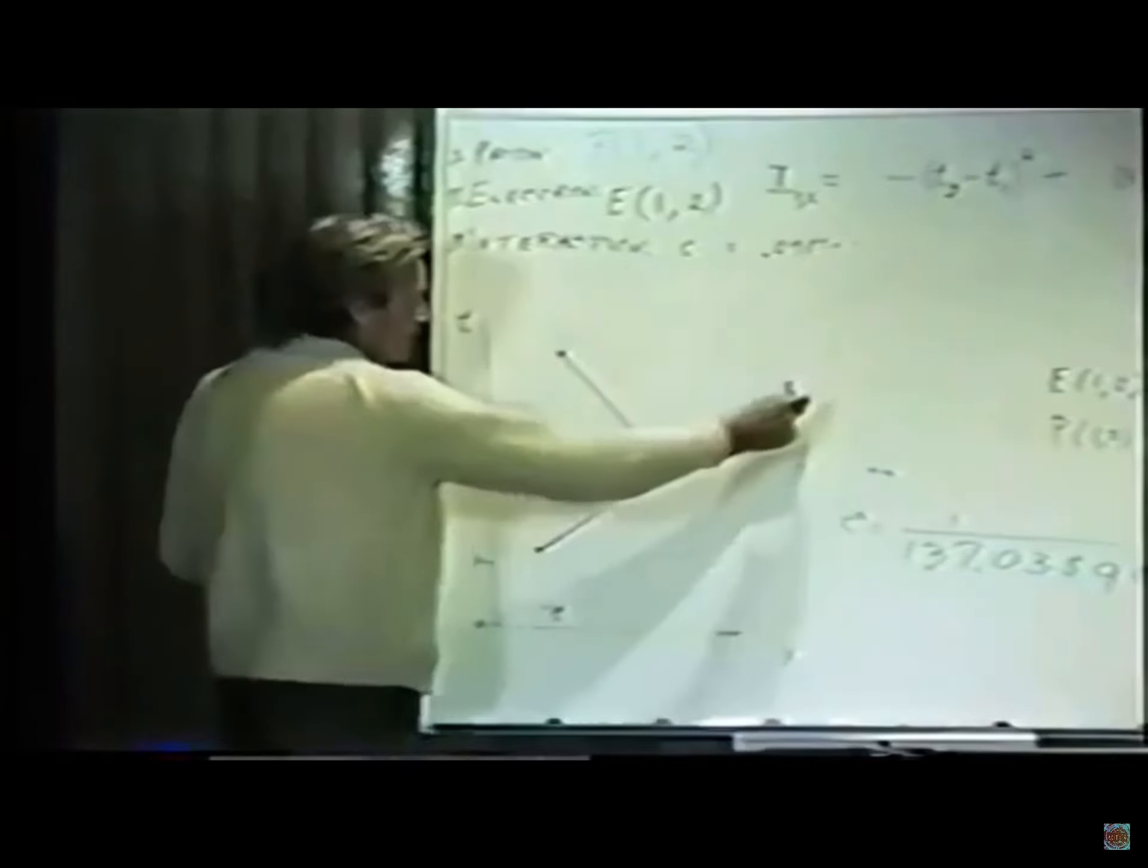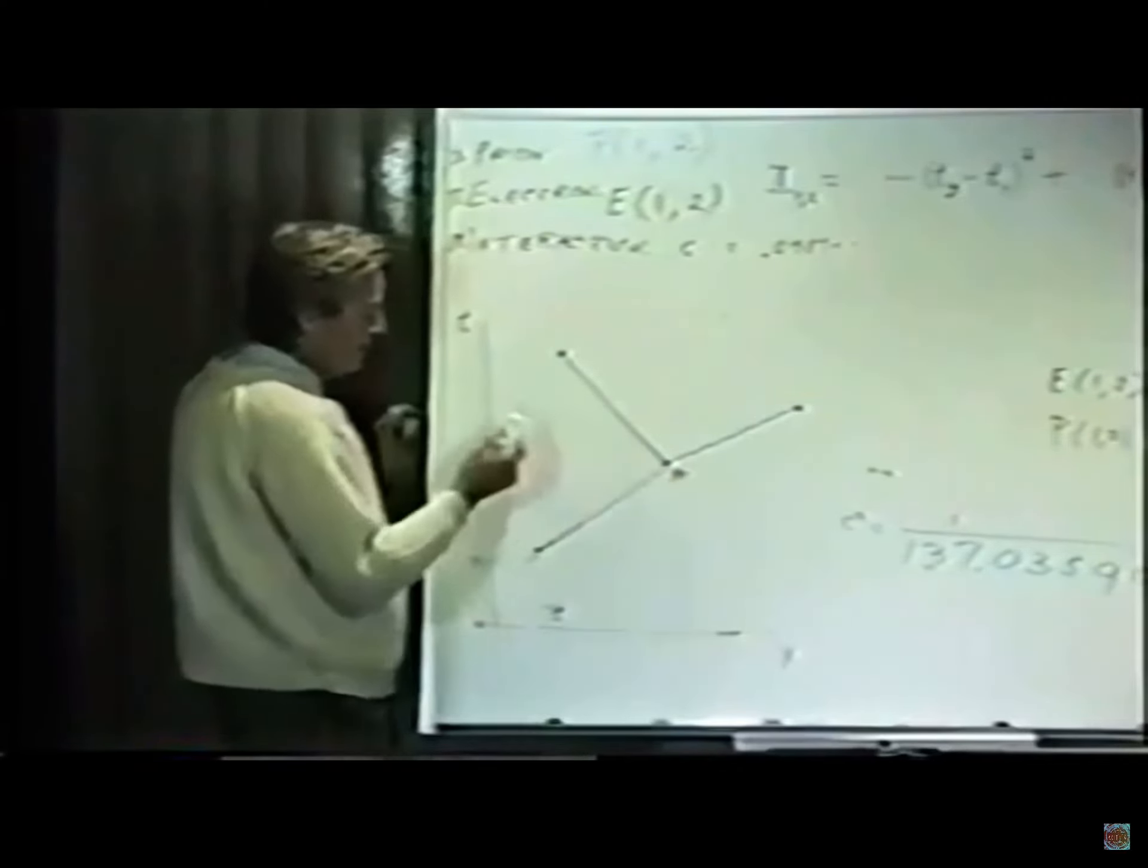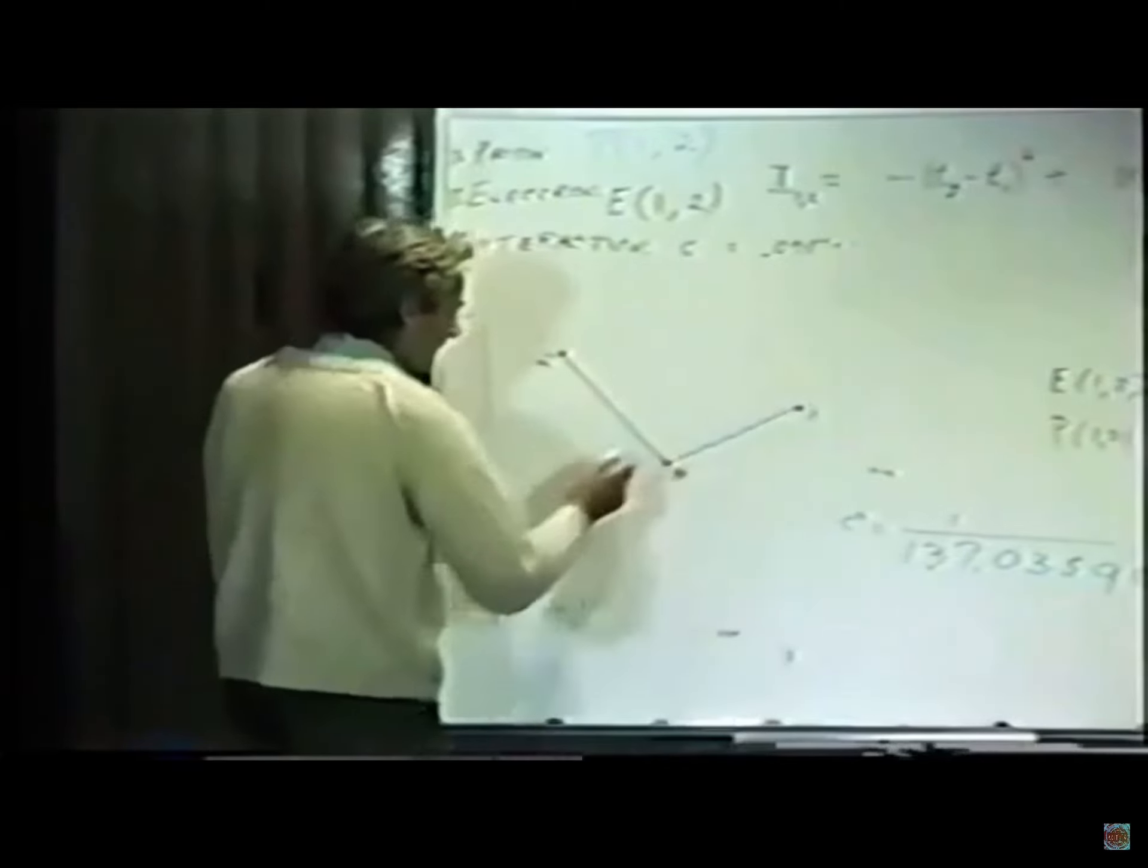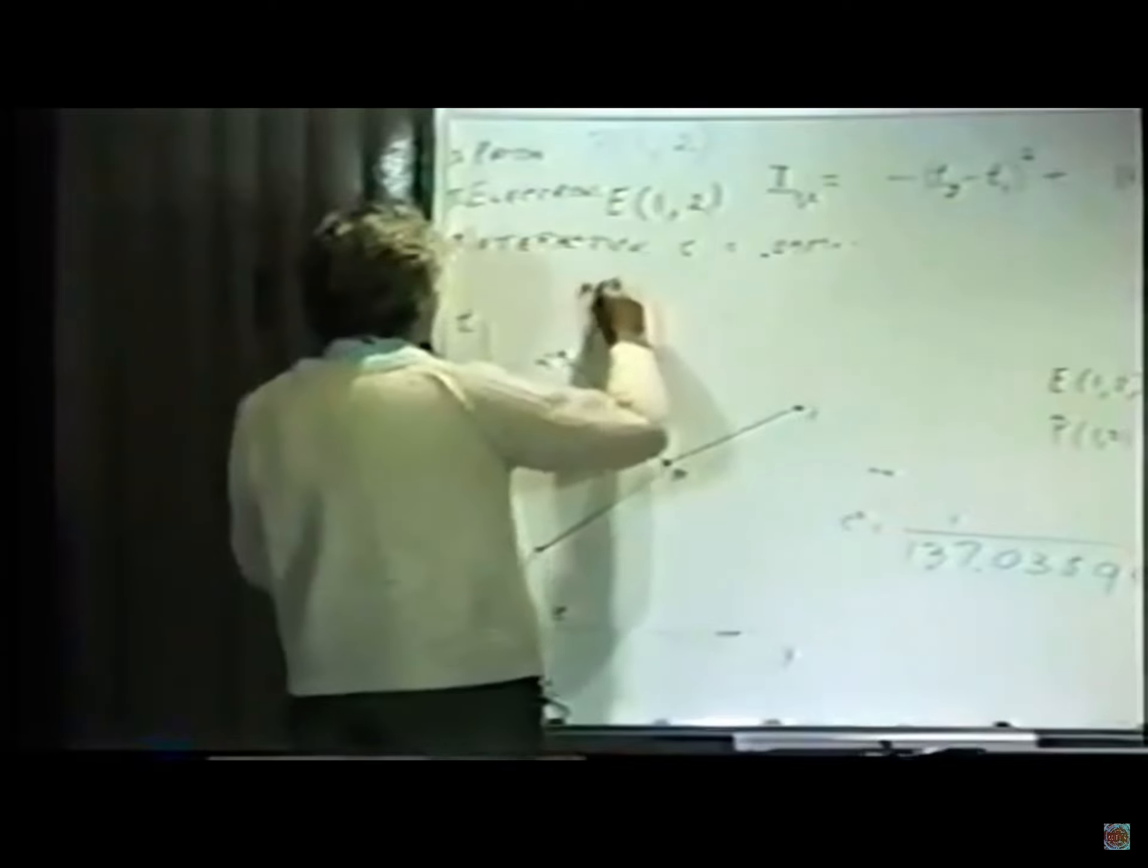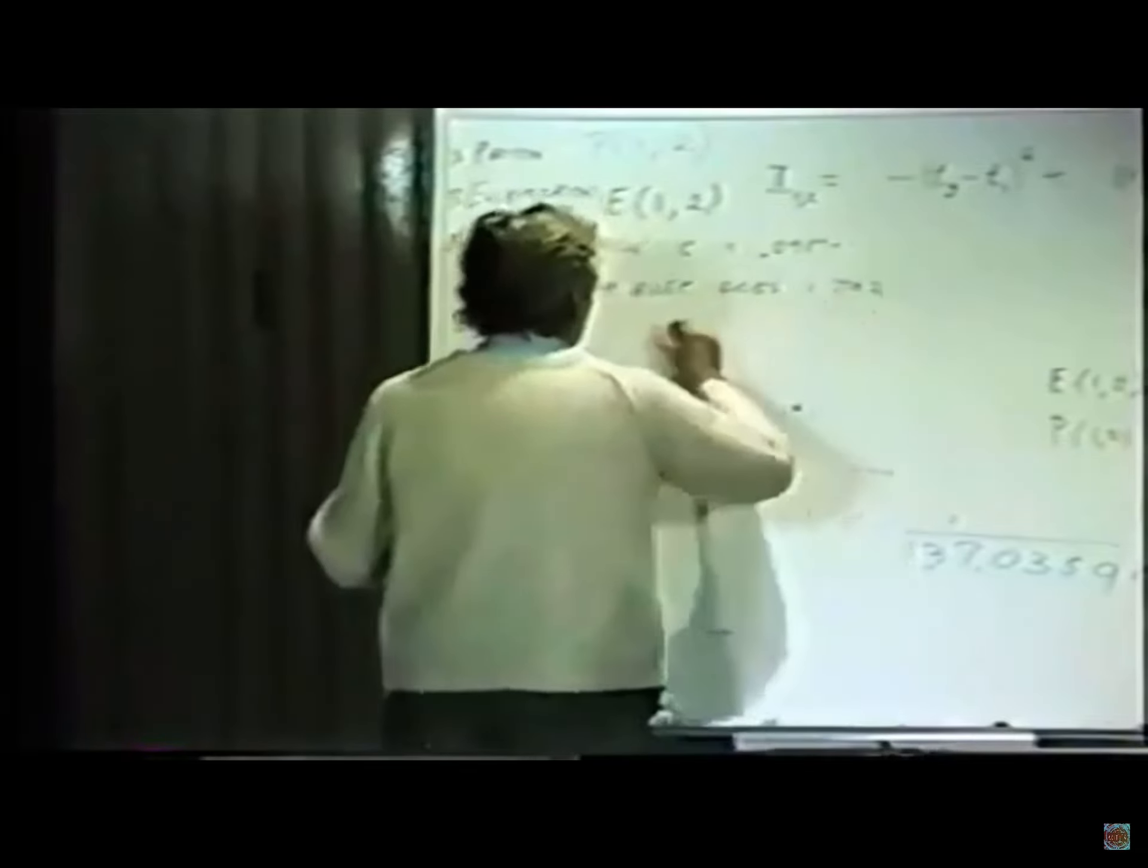The electron goes from this particular place in space and time to this particular place in space and time, and the photon is supposed to arrive here. One way it can happen is that the electron goes from this point, which I might call point one, to some other point, which I might call point four, and finally arrives at point two, whereas the photon goes from four to point three. This would be the typical amplitude. I'll draw a picture like this and tell you how to calculate it. Let's suppose I wanted to calculate the amplitude: the electron goes one to two and the photon appears at three.